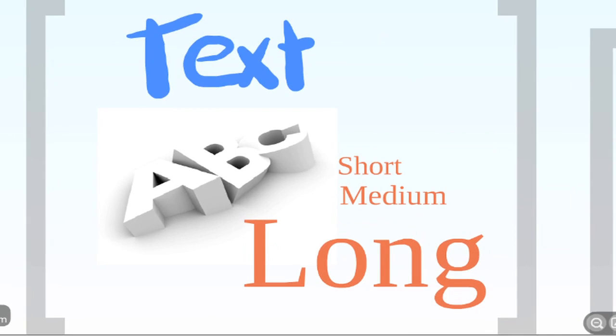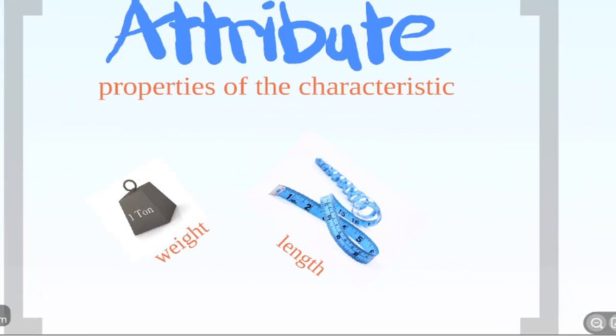The next type is called attributes. This is used to describe the properties of the characteristic. For example, a product will have measurements like weight and length. These are the properties of the product and they come under attributes.